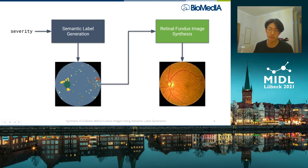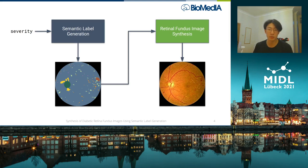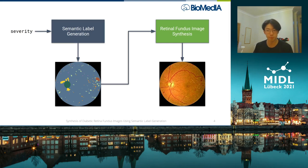For this first part — semantic label generation — our initial experience involved applying existing GAN architectures to this problem. But what we quickly found is that these GANs have been designed for natural, dense RGB images. The main issue we faced was that the large number of channels, together with very sparse labels, made the discriminator extremely prone to collapsing.